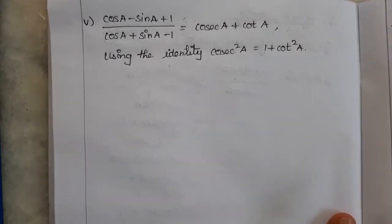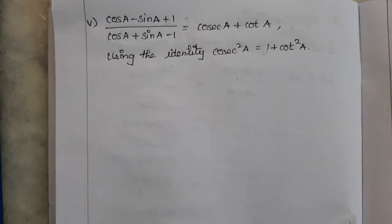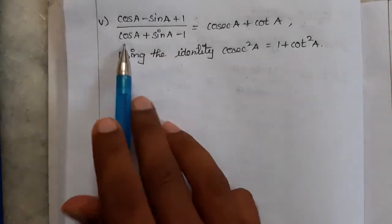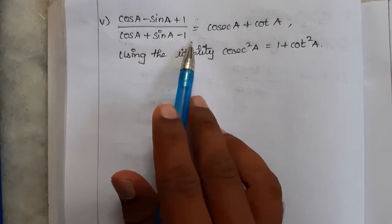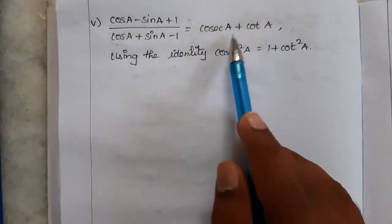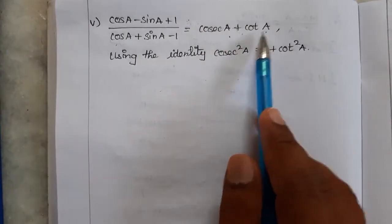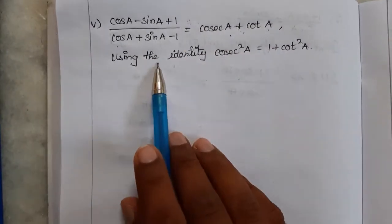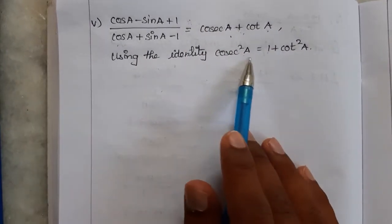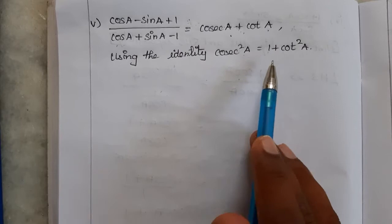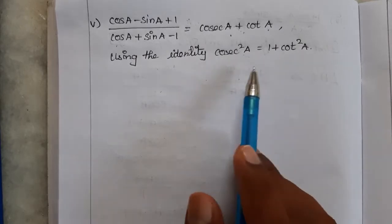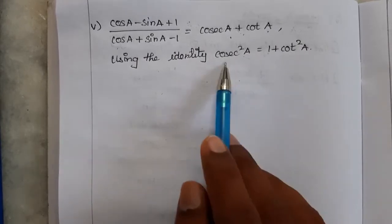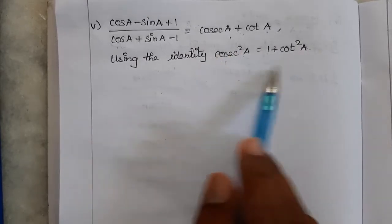Here we go for the next problem: cos A minus sin A plus 1 divided by cos A plus sin A minus 1 is equal to cosec A plus cot A. They also give a hint to use the identity cosec A squared minus cot A squared equals 1.